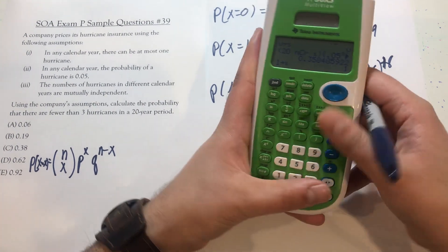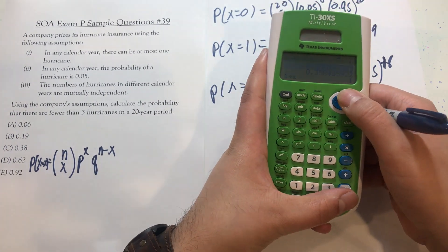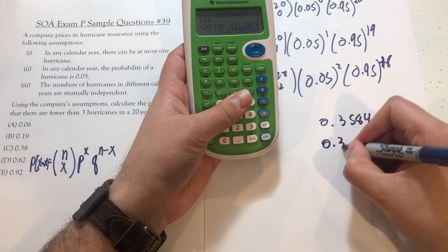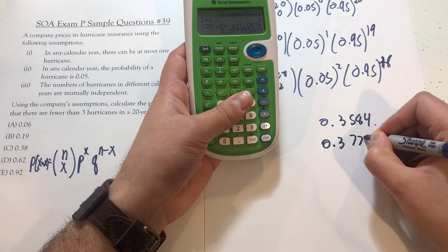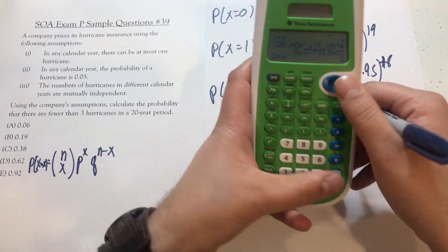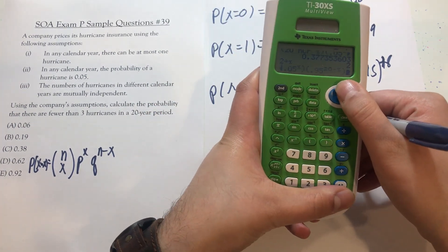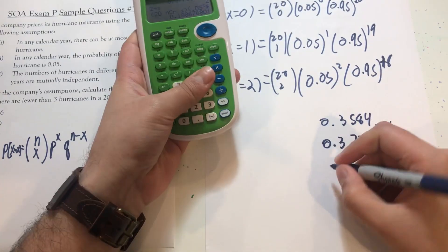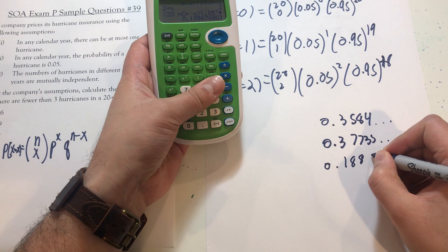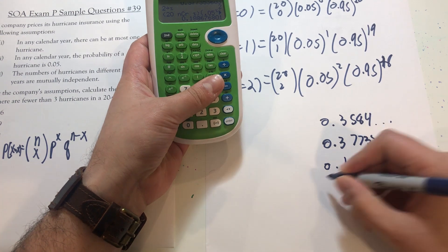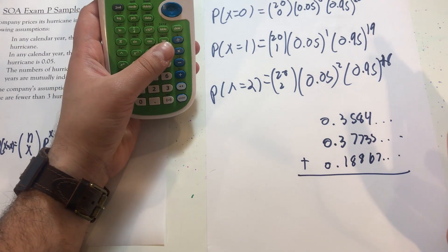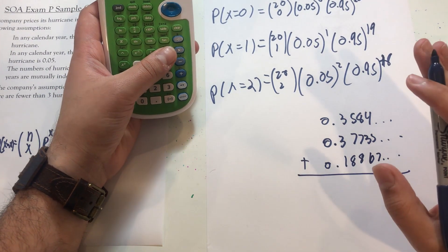So what I do is one store as x, and I just grab that equation. And it switches all the values, and that's 0.37735. And then two store as x, grab the same equation, and that's 0.18867.